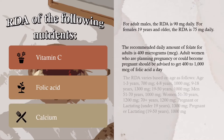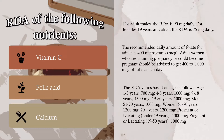Calcium: The RDA varies based on age as follows — age 1 to 3 years: 700 milligrams; 4 to 8 years: 1,000 milligrams; 9 to 18 years: 1,300 milligrams; 19 to 50 years: 1,000 milligrams; men 51 to 70 years: 1,000 milligrams; women 51 to 70 years: 1,200 milligrams; 70 plus years: 1,200 milligrams; pregnant or lactating under 19: 1,300 milligrams; pregnant or lactating 19 to 50 years: 1,000 milligrams.